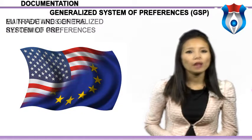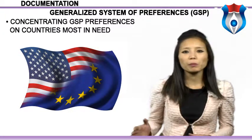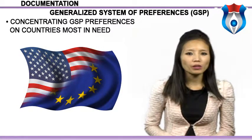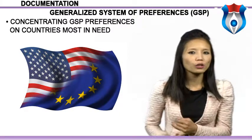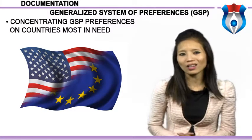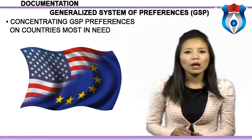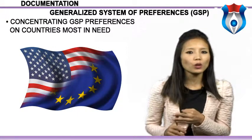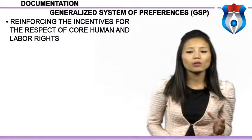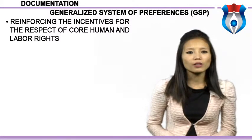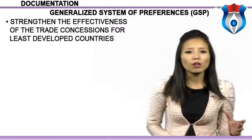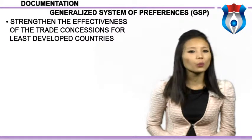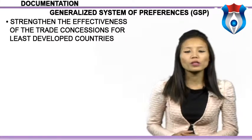The main features of the GSP reform include concentrating GSP preferences on countries most in need. A number of countries that do not require GSP preferences to be competitive will no longer benefit from the system as of 1st January 2014 — including countries that already have preferential access to the EU at least as good as under GSP, such as under a free trade agreement, countries which have achieved high or upper middle income per capita based on World Bank classification, and a number of overseas countries and territories with alternative market access arrangements. The reform also reinforces incentives for respect of core human and labour rights, environmental and good governance standards, and strengthens the effectiveness of trade concessions for least developed countries through the Everything But Arms (EBA) system. Reducing GSP to fewer beneficiaries will reduce competitive pressure and make preferences for LDCs more meaningful.